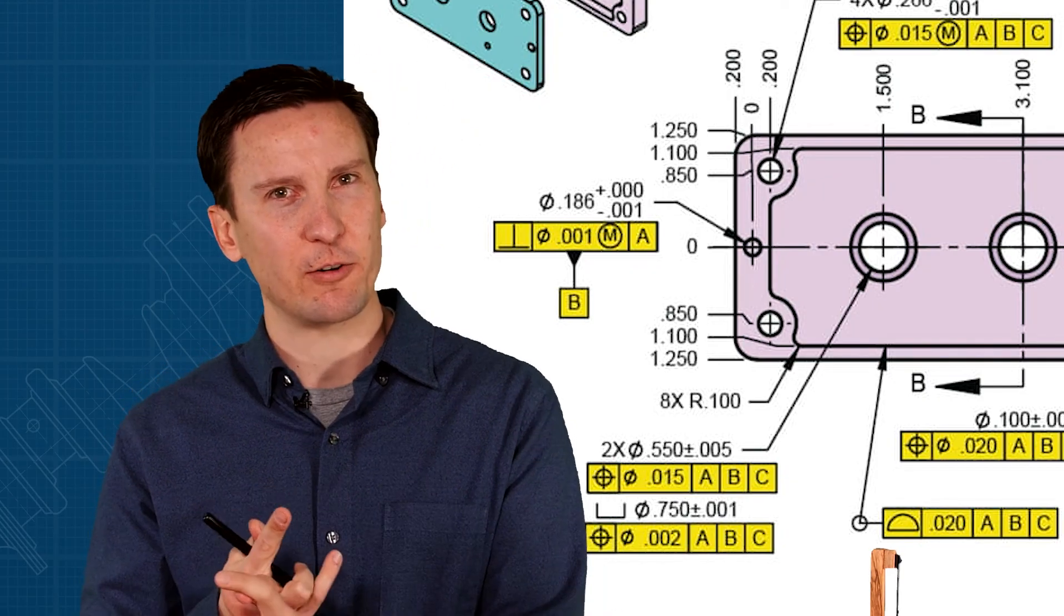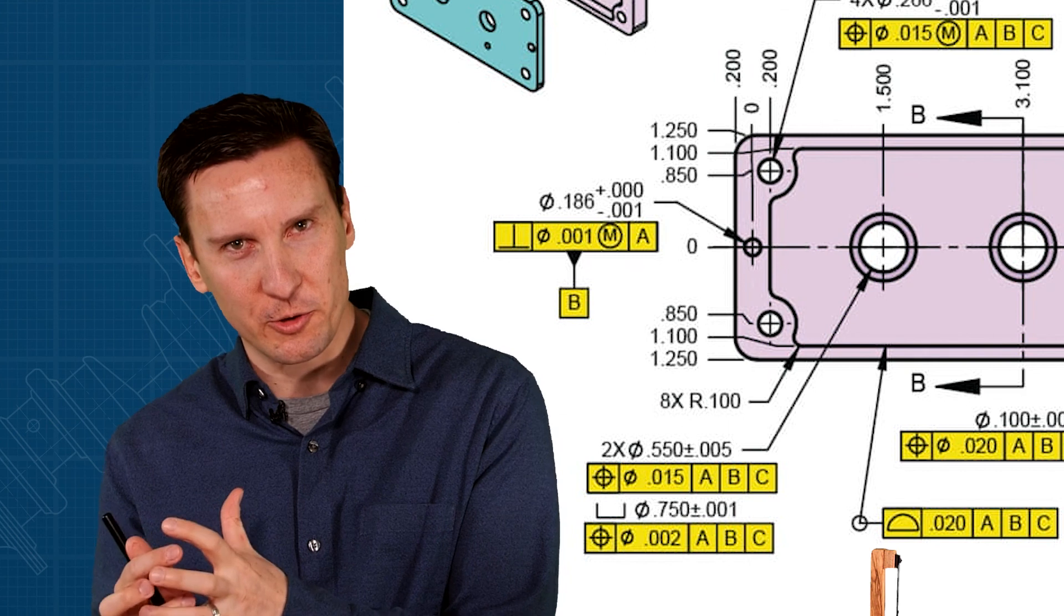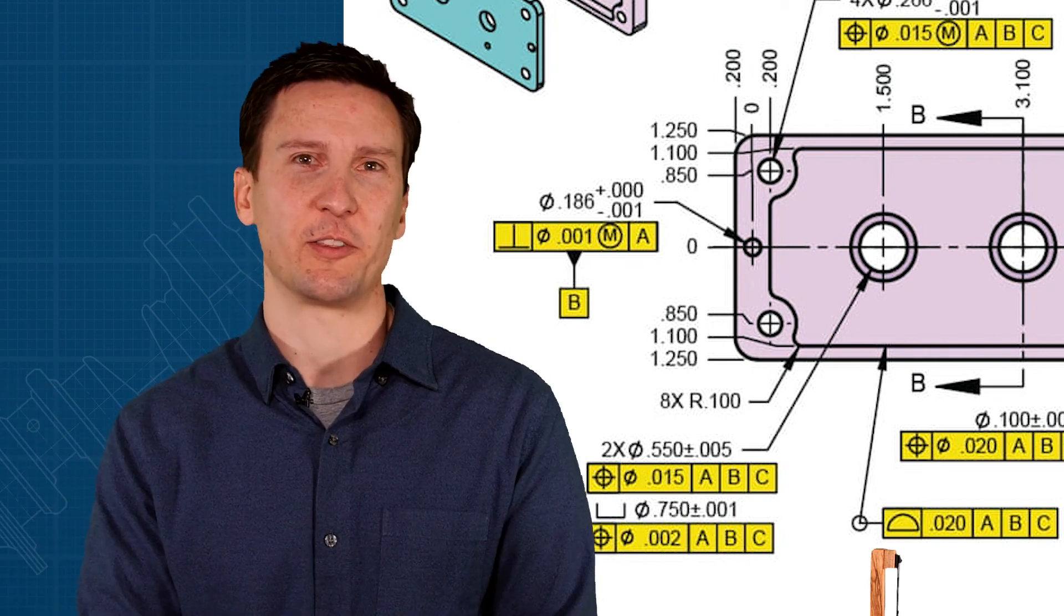Hopefully this practical example helped you here to see how the parts mount together. That's where the datum features come in, tight tolerances on position and profile for critical features, and looser tolerances on things that don't matter.